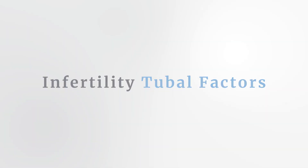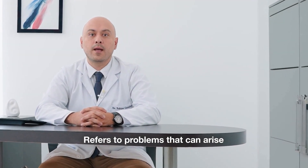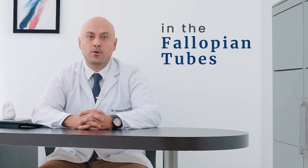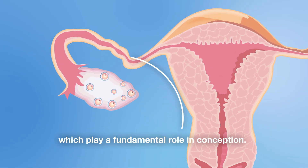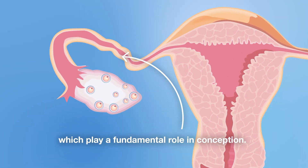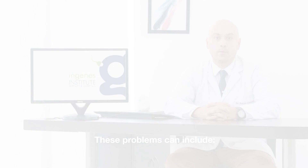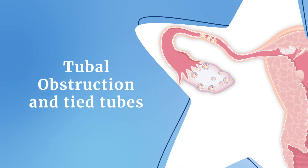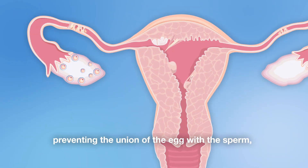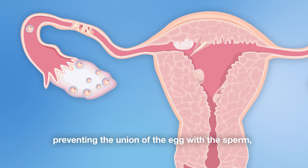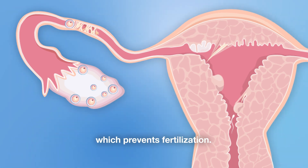Infertility tubal factors refers to problems that can arise in the fallopian tubes, which play a fundamental role in conception. These problems can include tubal obstruction and tied tubes, preventing the union of the egg with the sperm, which prevents fertilization.